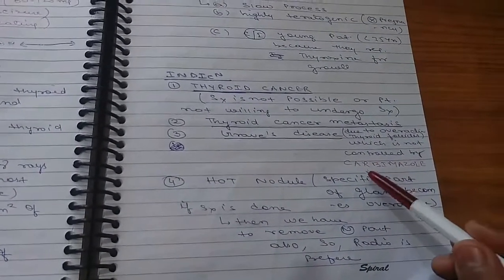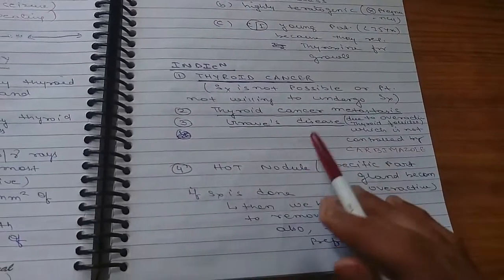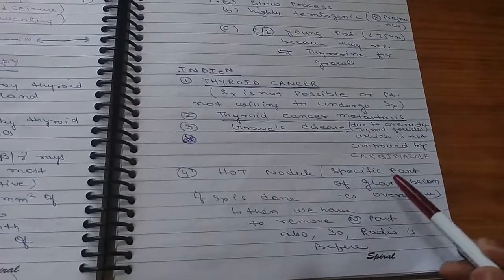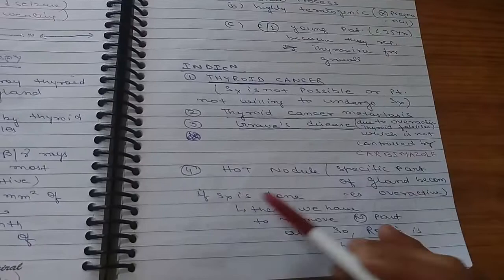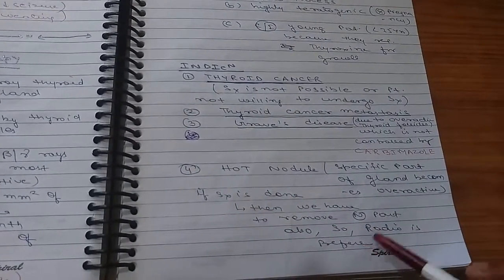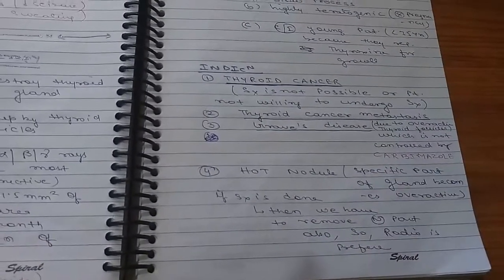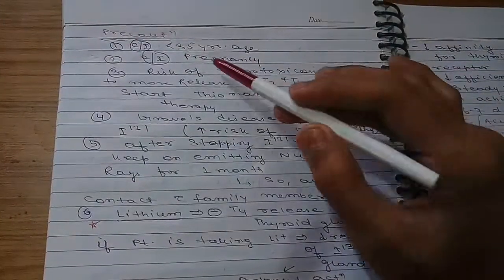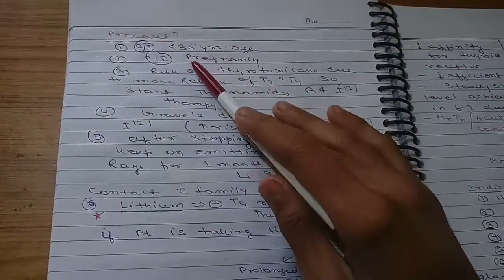Thyroid cancer metastasis, you can also use this drug. Graves' disease due to overactive thyroid follicles which is not controlled by carbimazole, so you can undergo this therapy. Hot nodule - that is a specific part of gland becomes overactive. If surgery is done, we have to remove normal part also, so radiotherapy is used.